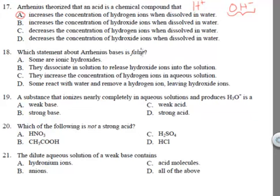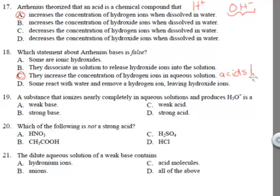Which statement about Arrhenius bases is false? 'Some are ionic hydroxides' — that's correct. 'They dissociate in solution to release hydroxide ions' — that's also correct. 'They increase the concentration of hydrogen ions in aqueous solution' — that is NOT correct, so that would be false. This is what acids do, not bases. Some react with water to remove a hydrogen ion, leaving hydroxide ions — that's an accurate statement for bases.